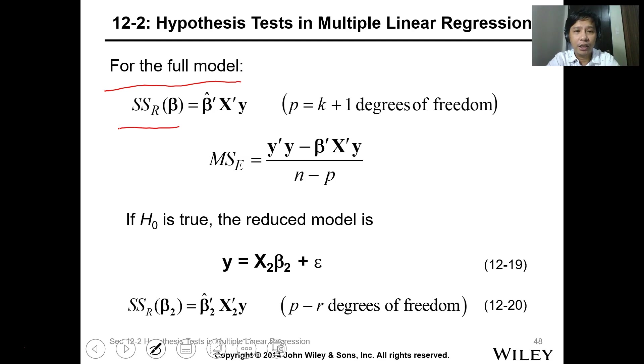The data - this is the coefficient times X transpose Y, which equals k plus 1 degrees of freedom. So you're reduced by one degree of freedom.